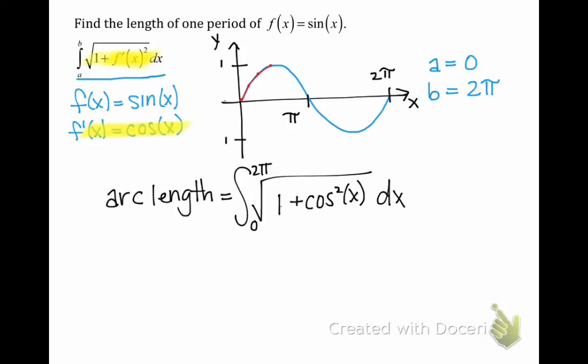Welcome back! When we evaluate this definite integral, our result is 7.64 units, which is the length of the graph, one period of the graph, of f of x equals sine of x. A straight line from x equals zero to x equals two pi is about 6.28 units long.